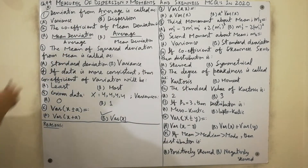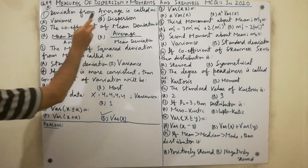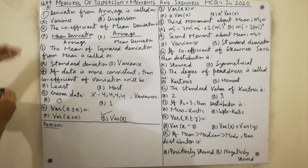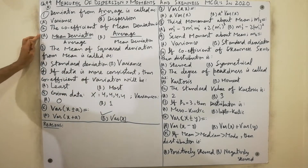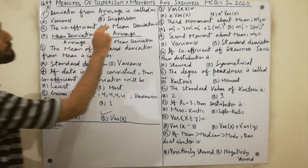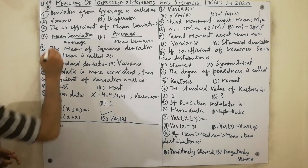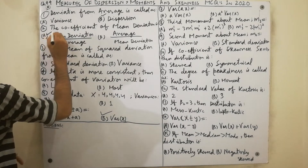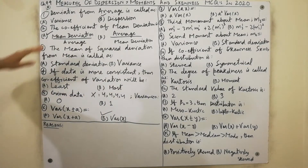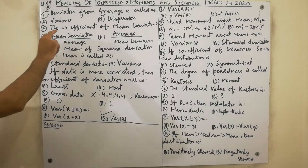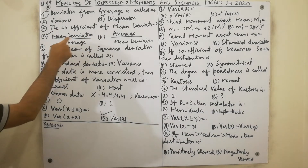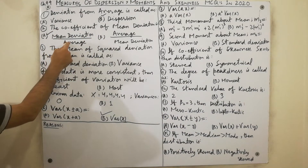Moving to the second MCQ: the coefficient of mean deviation. The formula is very simple — the coefficient of mean deviation is equal to mean deviation divided by average.